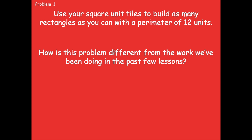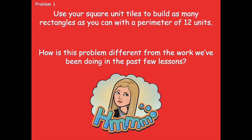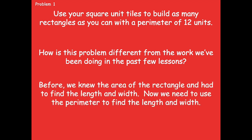Let's look at problem one. The directions say: use your square unit tiles to build as many rectangles as you can with a perimeter of 12 units. How is this problem different from the work we've been doing? Before, we knew the area of the rectangle and had to find the length and width. Now we need to use the perimeter to find the length and width — we're kind of going backwards. We know the total but we don't know the individual side lengths.